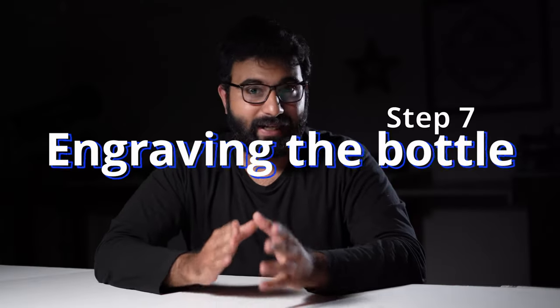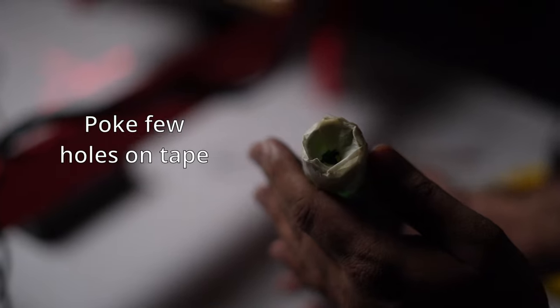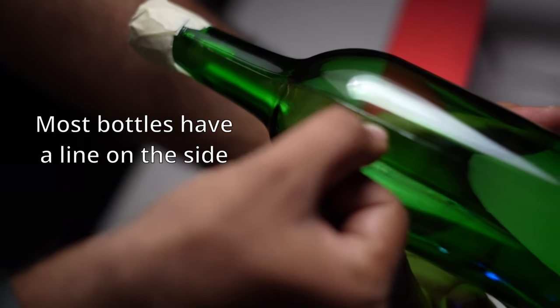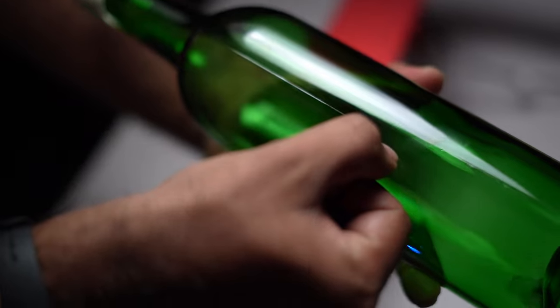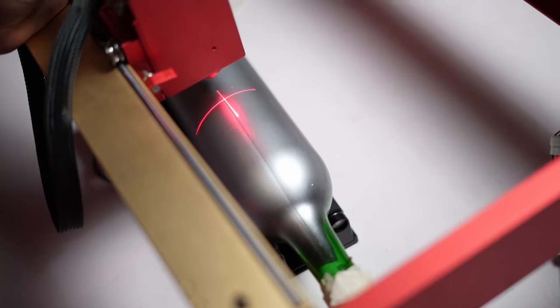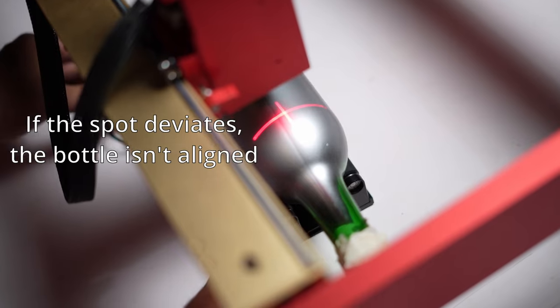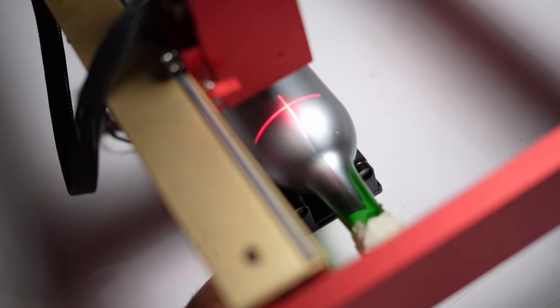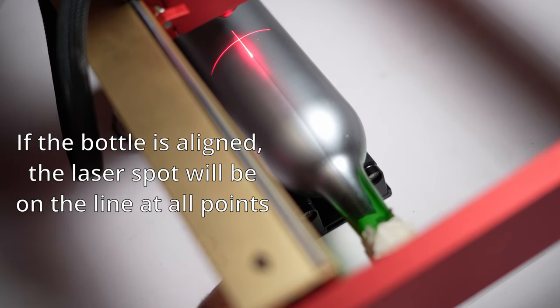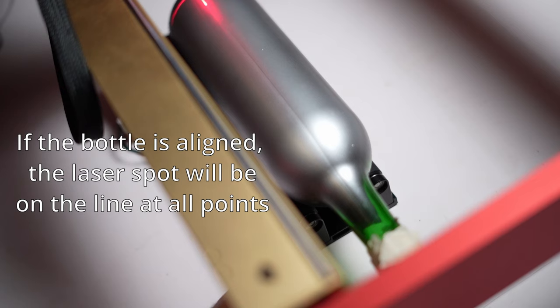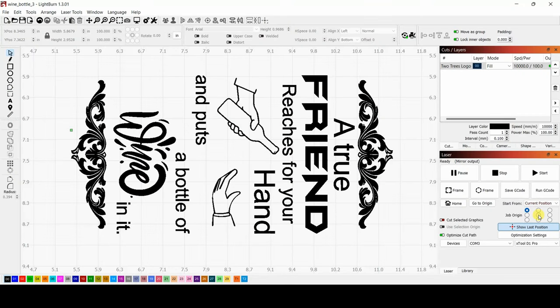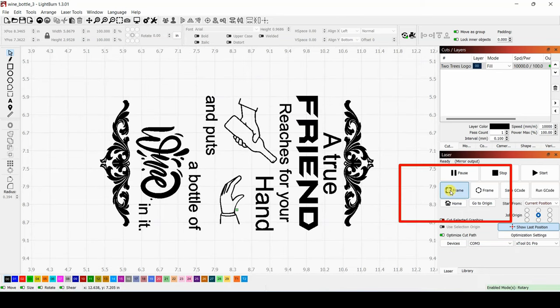Once you have everything set, it's time to start engraving. But before you do that, poke a few holes on the tape to allow the air to escape. Now, I'll show you a technique to perfectly align your bottle with the laser so that your design is not tilted. Most bottles will have a perfectly straight line on the side. This is where the molds join when they make the bottles. Now, what we do is, we move the laser head along the x-axis. If the spot deviates from the line on the bottle, the bottle is not aligned. We look at which side the spot deviated and we adjust the rotary module to get perfect alignment. If the bottle is aligned, the laser spot will be on the line at all points. Once that's done, we roll the bottle and point the laser to the origin. I always like to use the center as origin for engraving on bottles. You can click on frame to see if everything is where it's supposed to be and hit run.